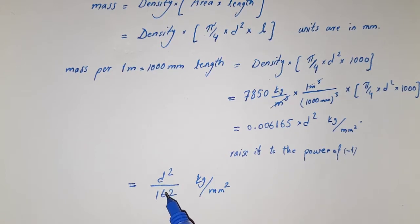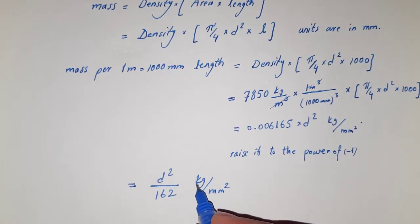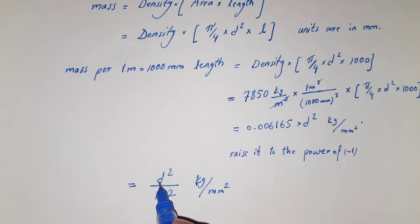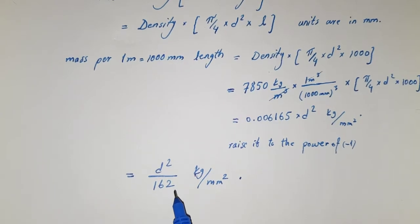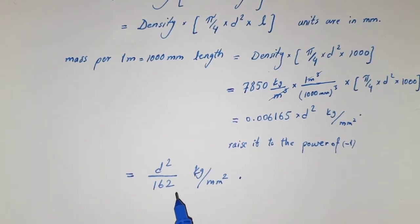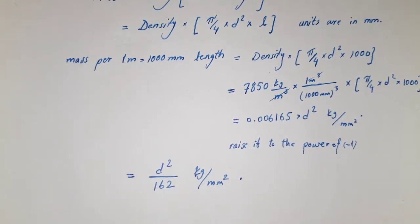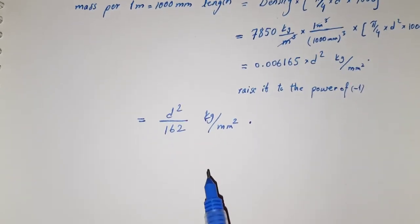So here we know that if you put the diameter of a bar in millimeters, this millimeter will go with this millimeter square, then the unit will become kilograms. This was the mass of a reinforcement bar per 1 meter length of the bar.